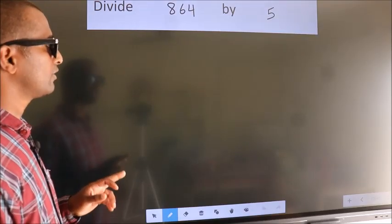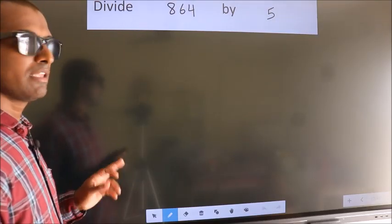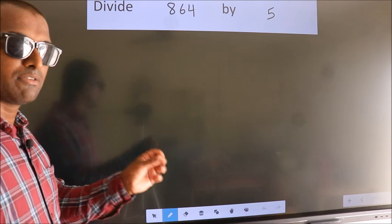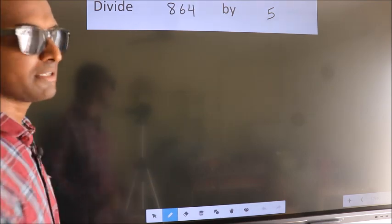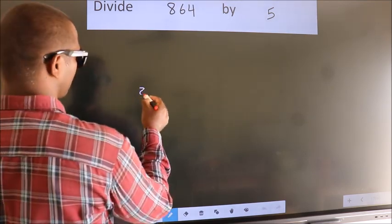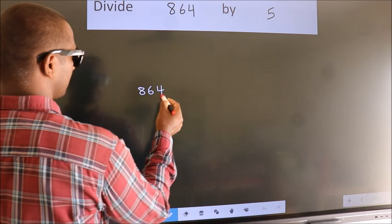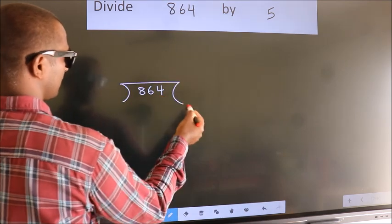Divide 864 by 5. To do this division, we should frame it in this way. 864 here, 5 here.